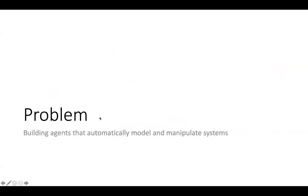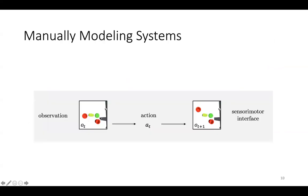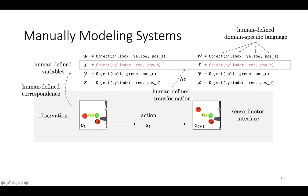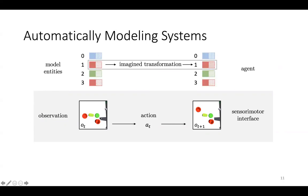The general problem we tackle is building agents that automatically model and manipulate systems. Traditionally, humans use computers to model systems of objects by abstracting the scene into variables, in this case as representations of objects, and write code for the domain-specific language and transformations that process these variables. In contrast, automatically modeling systems requires that the agent construct its own variables, learns transformations on these variables, and ground these variables and its observations without supervision.